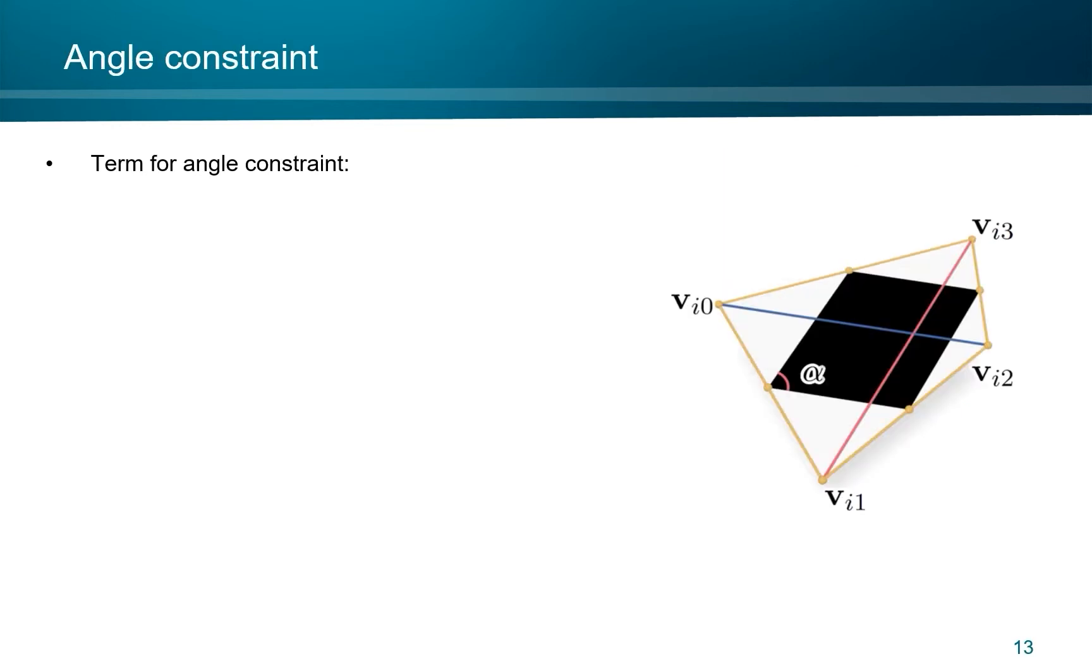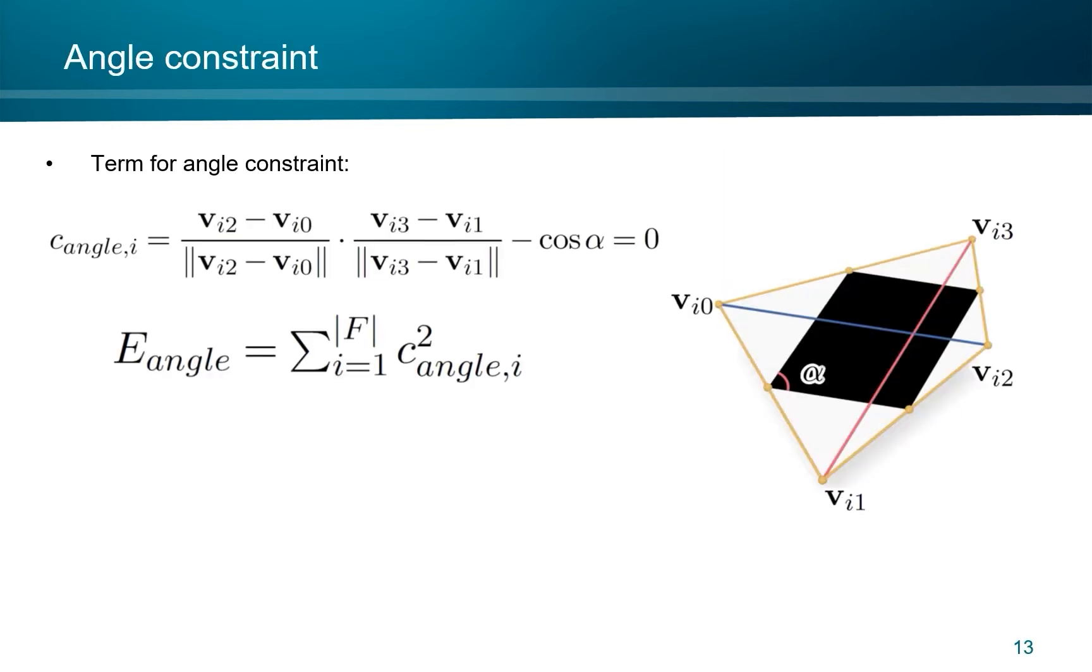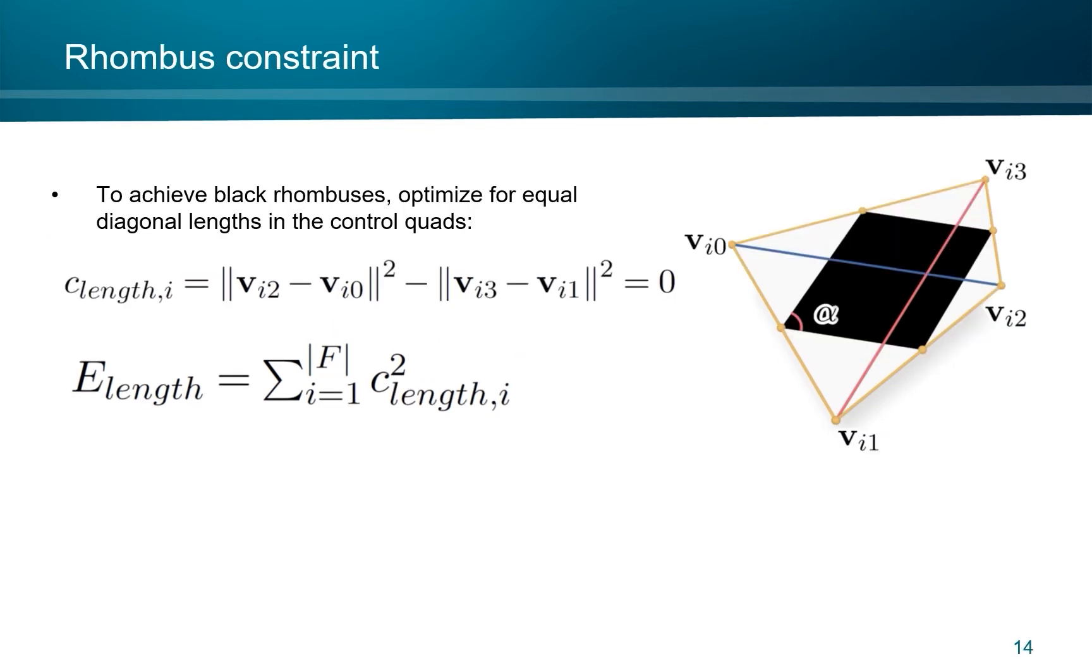The term for angle constraint is totally straightforward. We just write down the known formula for computing an angle between two vectors. Here, of course, are diagonal vectors in a control quad. Note that constant angles are easily expressed, not just the right angles. To achieve black rhombuses in the pattern, we have to make sure that diagonals in a control quad have equal lengths and the formulation in mathematics is straightforward.